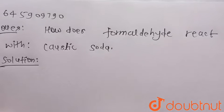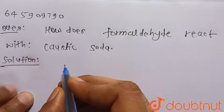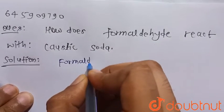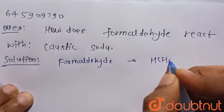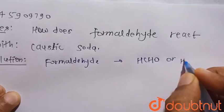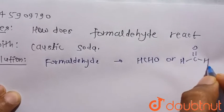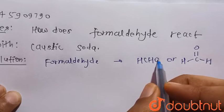Hello everyone, consider the given question: how does formaldehyde react with caustic soda? So first we have to write their chemical formula. We know that formaldehyde is HCHO or H-C double bond O-H, that it does not have any alpha carbon or alpha hydrogen.